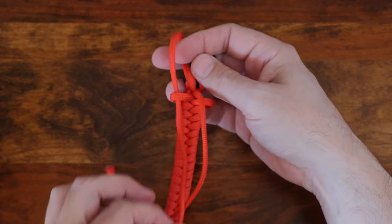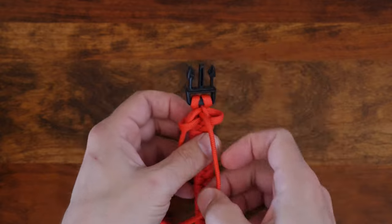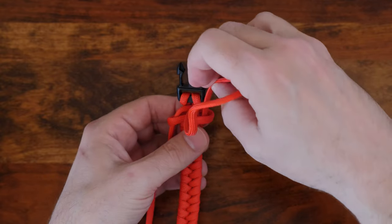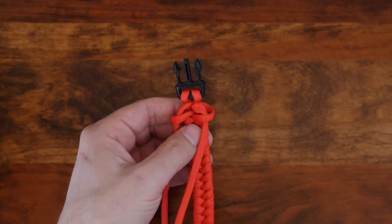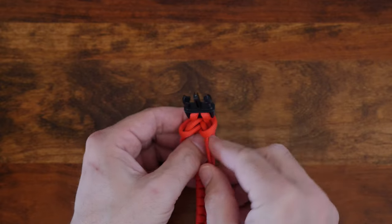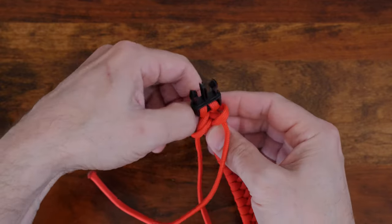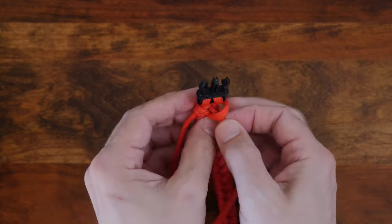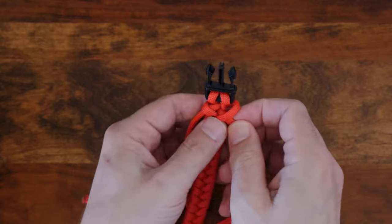If you'd like, you can pass it under more than one weave, but I think it's unnecessary. With my working ends now under the last loop, I'm just going to cinch it up nice and tight.